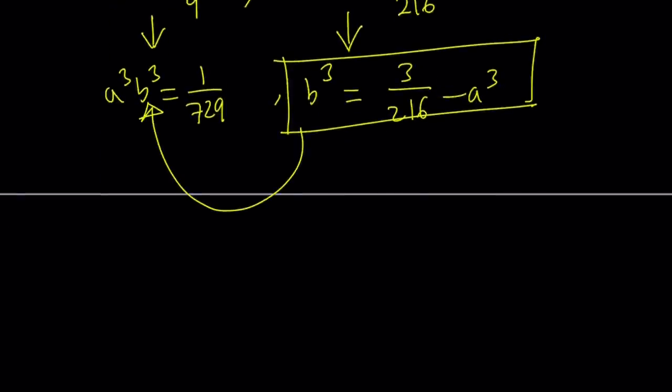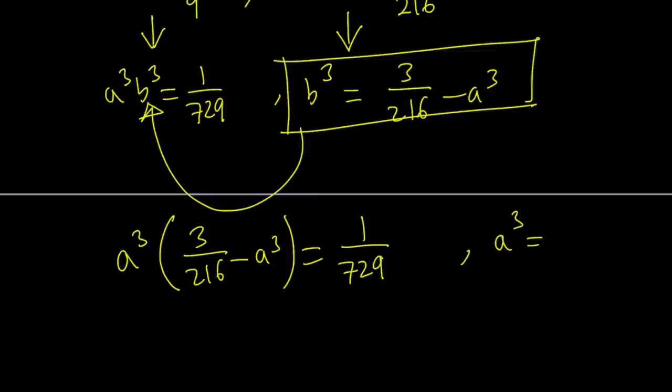I told you it's a painful method, but it works. So now we can go ahead and substitute b cubed here. And that's going to give us a cubed times b cubed, which is 3 over 216 minus a cubed equals 1 over 729. Great. Not so great, but, you know, anyways, not too bad. Now we're going to go ahead and use substitution. Set a cubed equal to c. And then you're going to get a quadratic equation from here, so on and so forth.